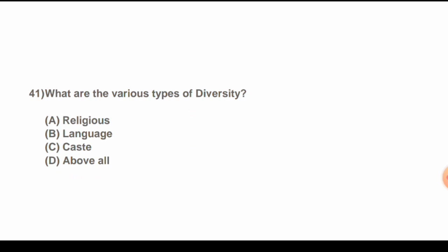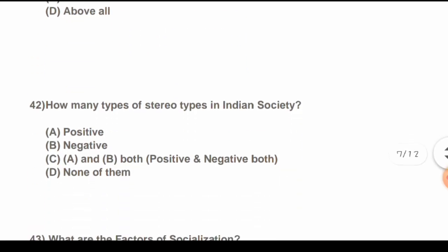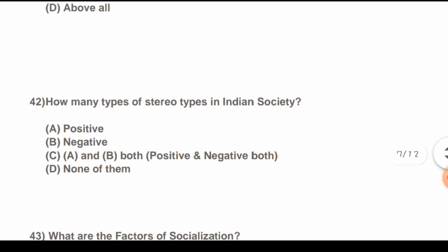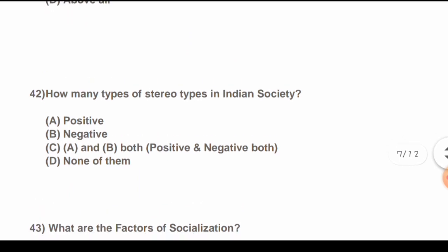Question 41: What are the various types of diversity? Options are: A) Religious, B) Language, C) Caste, D) All of the above. The correct answer is D) All of the above.